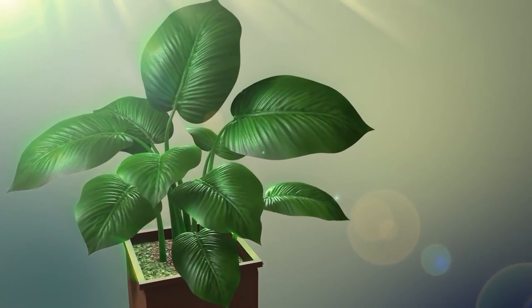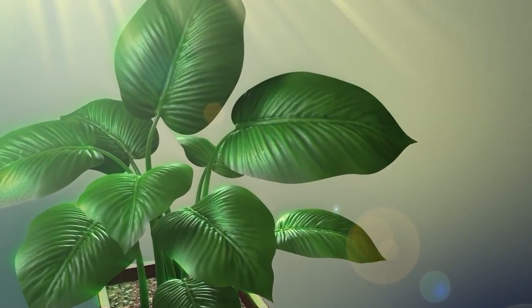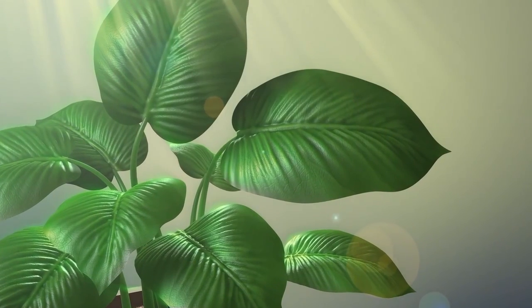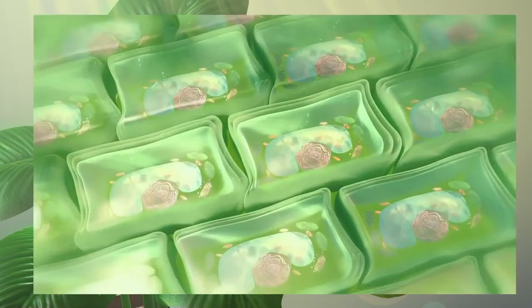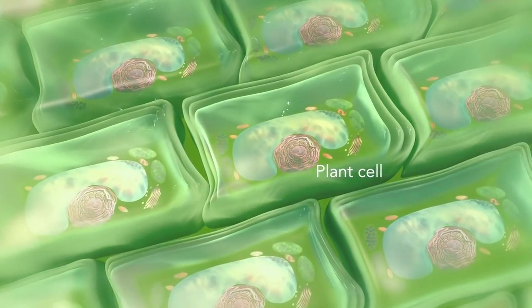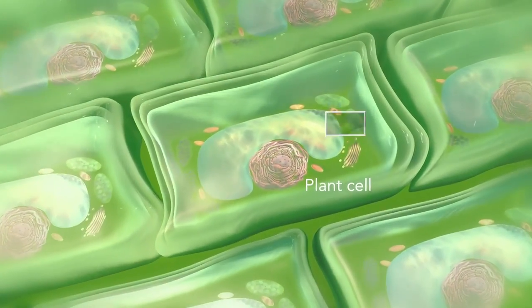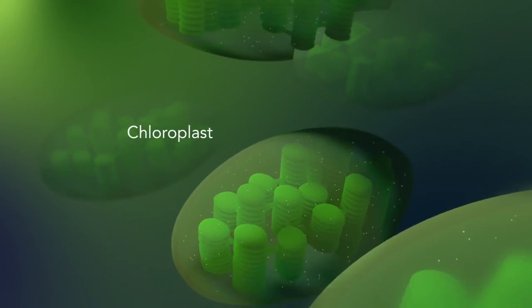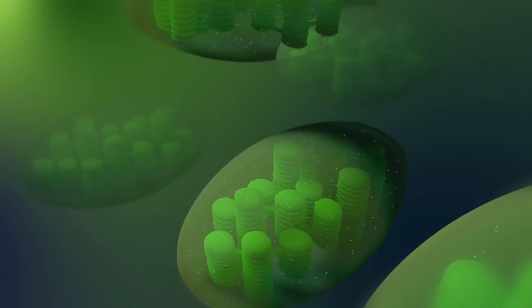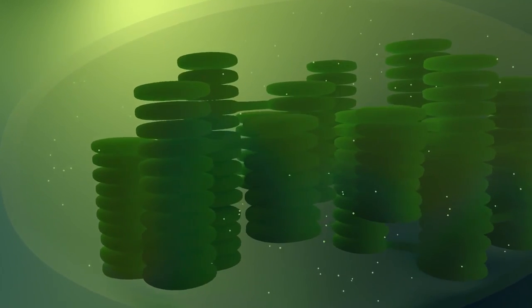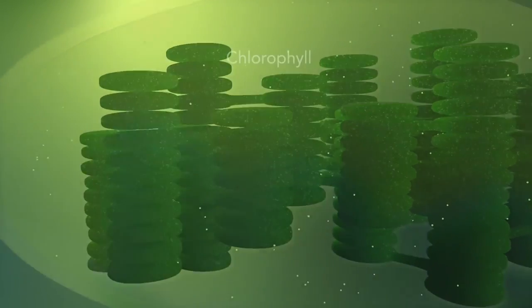Some organisms, such as plants, that are photoautotrophic, meaning they capture sunlight for energy, have cells with an organelle called a chloroplast. The chloroplast is where photosynthesis happens. It's green because it has a green pigment called chlorophyll.